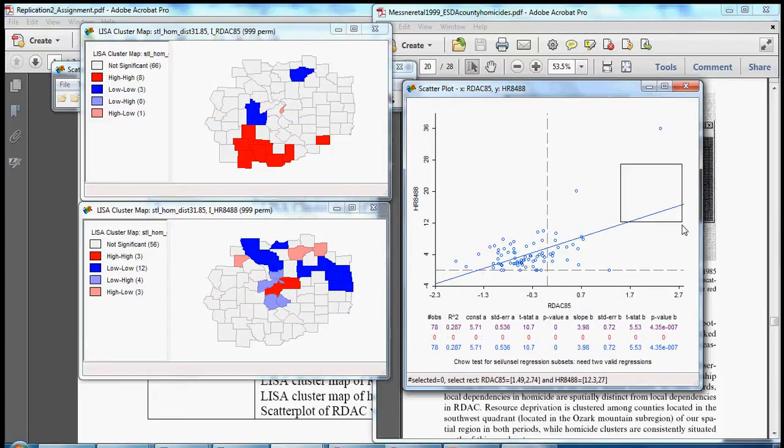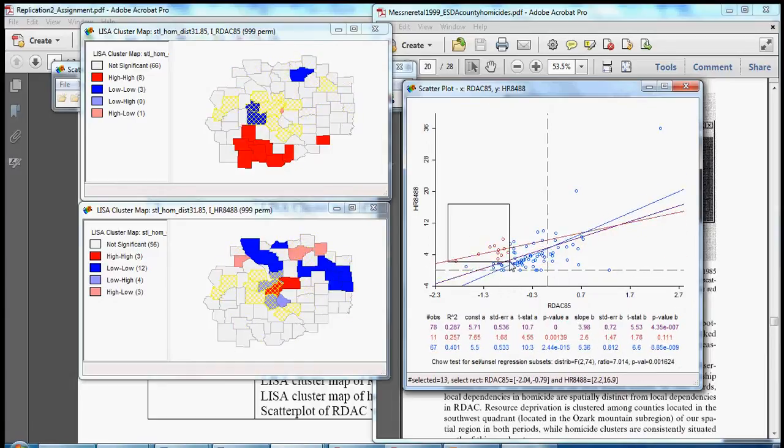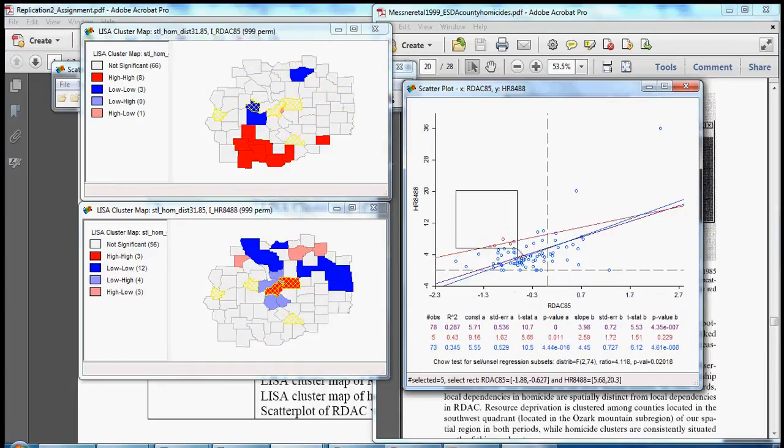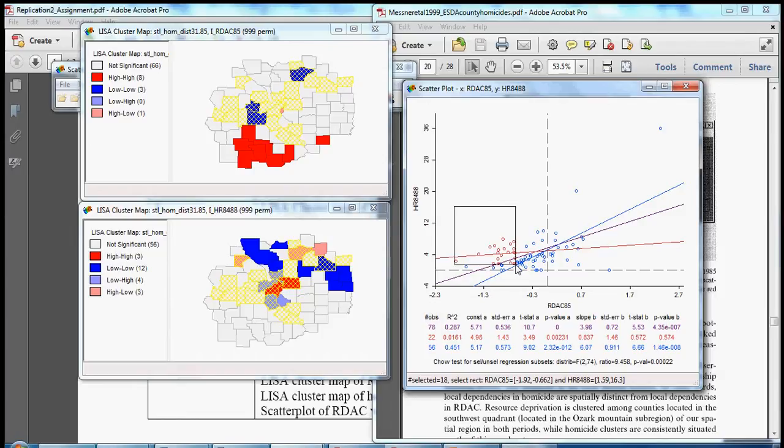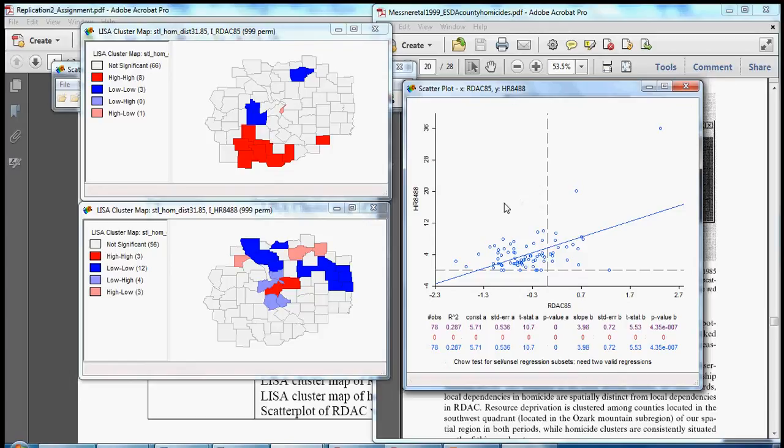This can be a very useful tool for just kind of quickly moving through and exploring your data, picking out big chunks of observations. You can see I'm just sort of moving around in the scatter plot and it's picking out different observations and selecting them in all of the maps that are linked to this scatter plot. If I click on the blank space again, the brush, quote unquote, goes away.